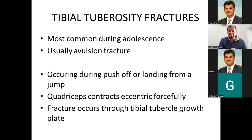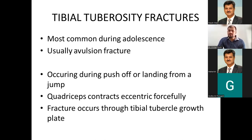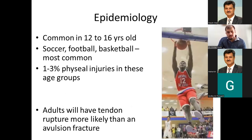For tibial tuberosity fractures, these occur mostly during adolescence when the physis has started to fuse and the tibial tuberosity physis is still open while the child is very active in sports. It happens due to eccentric quadriceps contraction during push-off or landing from a jump, causing the tibial tubercle growth plate to break off. Most commonly it occurs in 12 to 16 year olds. Basketball is the most common sport because it involves jumping and landing, followed by soccer and football.